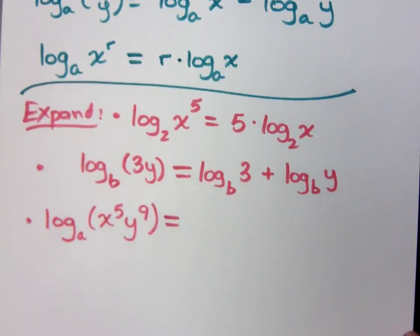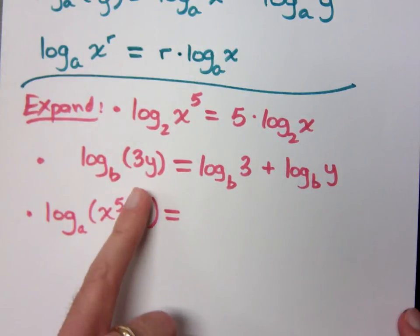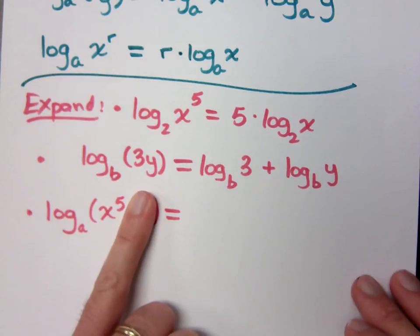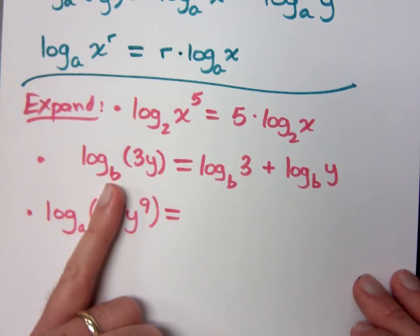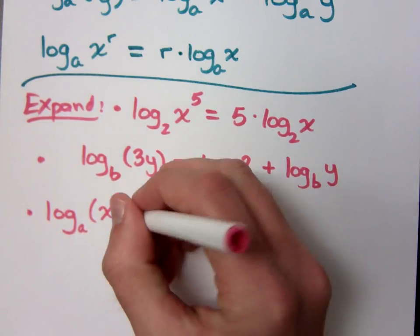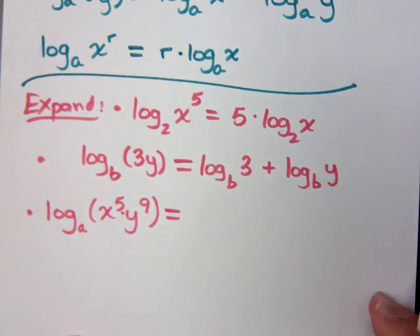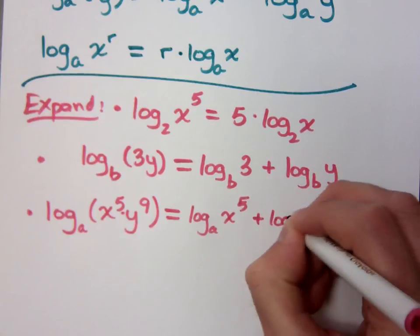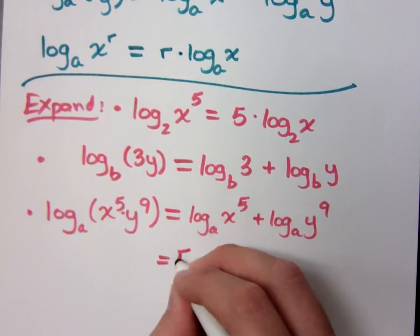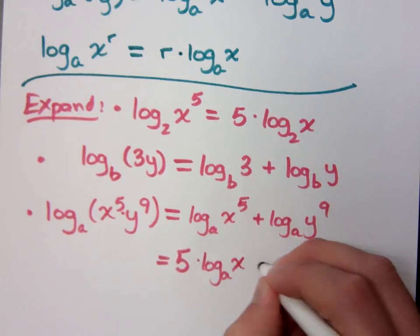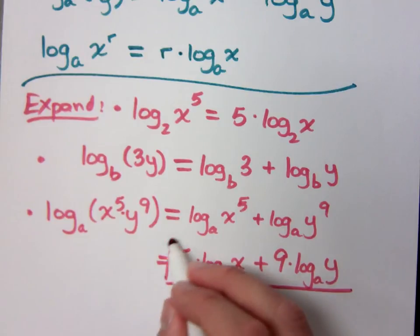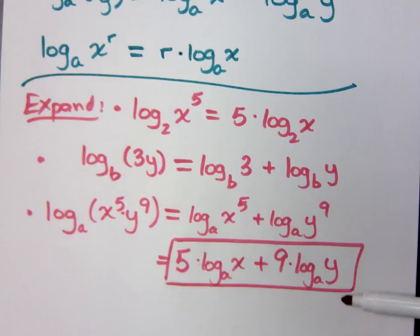You could write a lot of steps for this, but let's work through it. For just this piece — x to the 5th — you'd write 5 times log of x. For y to the 9th, you'd write 9 times log with base a of y. Since it's multiplication in the middle, when you separate this you get addition. So the full expansion is: log base a of x to the 5th plus log base a of y to the 9th, which gives 5 times log base a of x plus 9 times log base a of y. You should be able to skip straight from the original to the final answer.